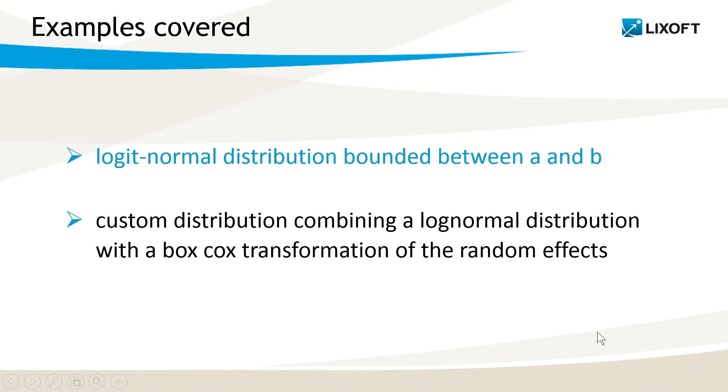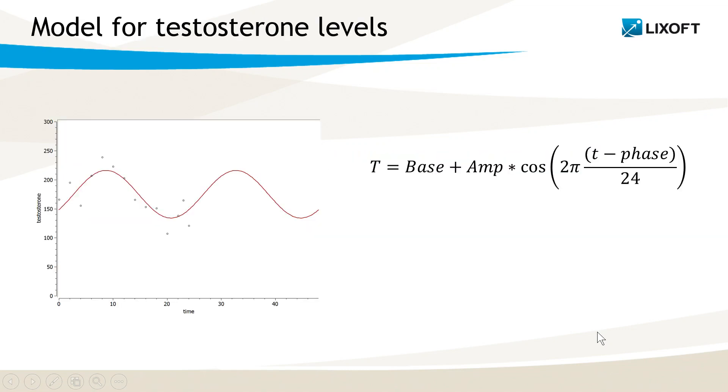Let's start with the bounded distribution, using a simple model for the circadian rhythms of testosterone as an example. The testosterone levels are assumed to have a base level, described by the base parameter, and on top of it an oscillation, described by the cosine function with a period of 24 hours. AMP is the amplitude of the oscillations,